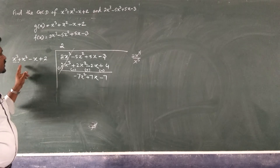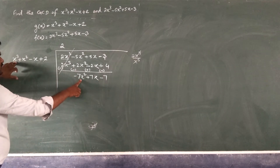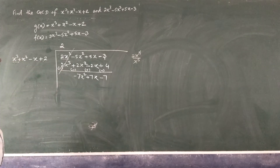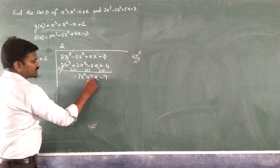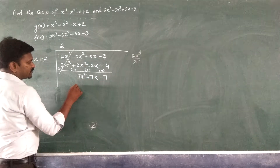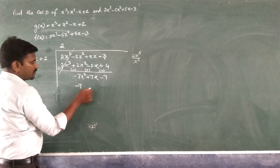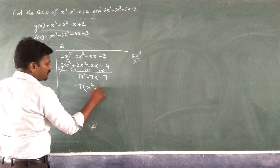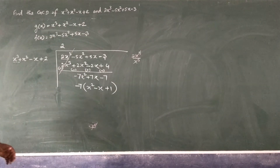The divisor has greater power so we cannot divide further. We check if there is any common factor — we take -7 as the common factor, giving x² - x + 1. Then the next step follows.